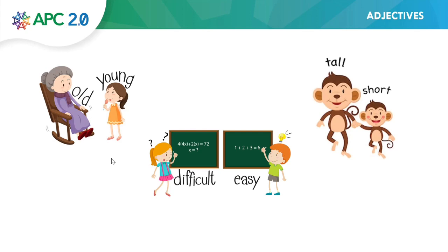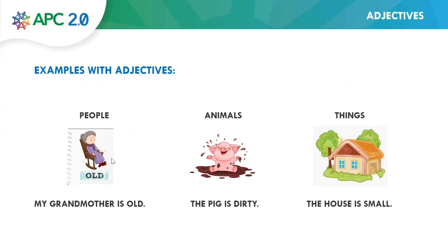Are you ready for more? Remember, an adjective describes people, animals, and things. Here we have some examples: my grandmother is old — that's an example with people. The pig is dirty — that's an example with an animal. And the last one: the house is small — that's an example with things.